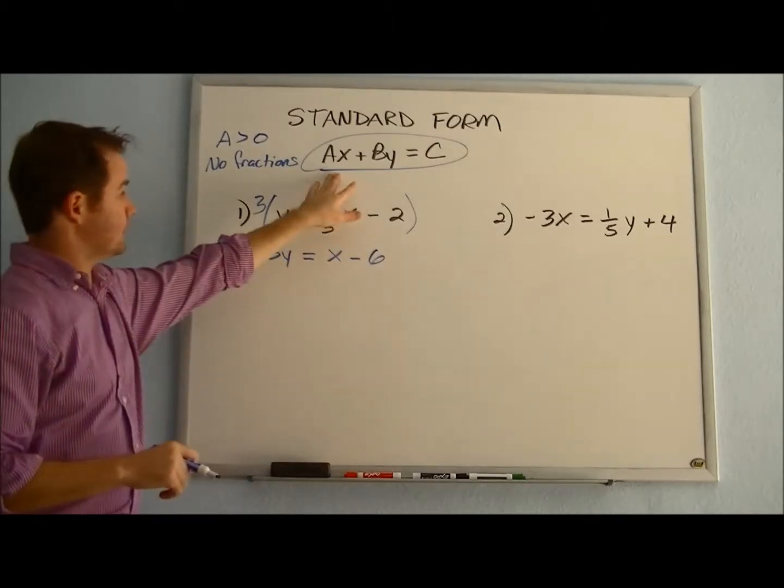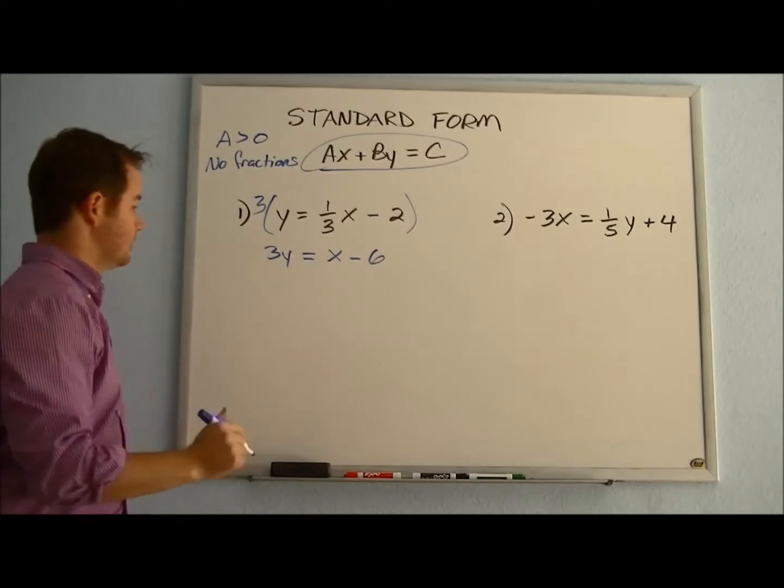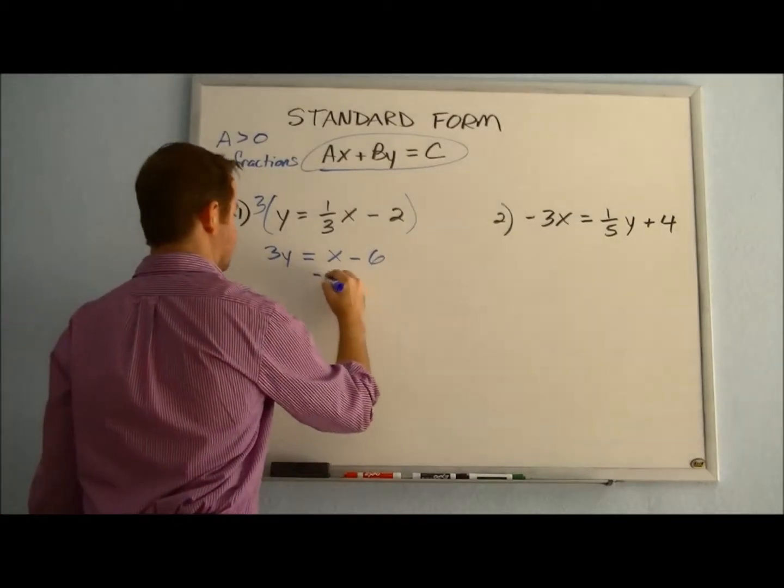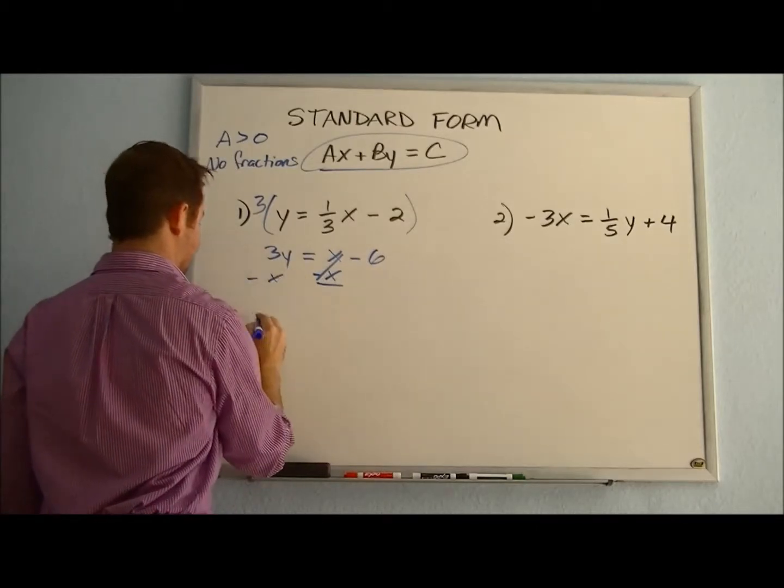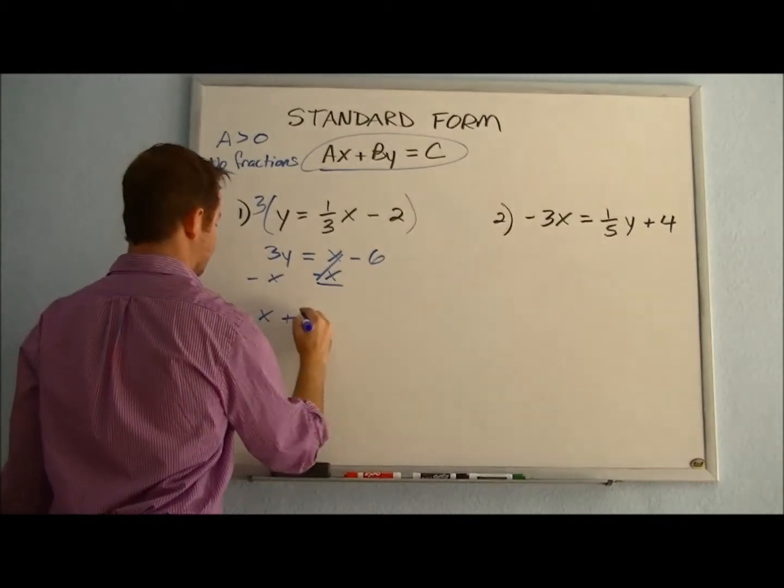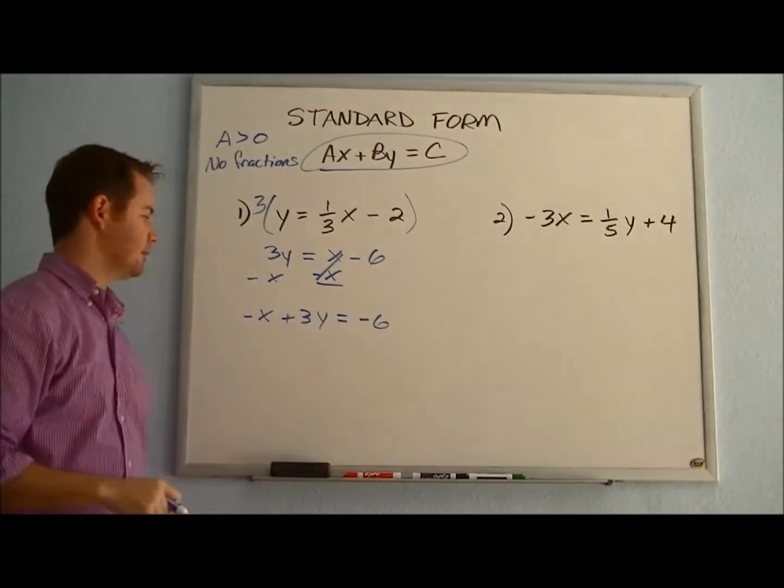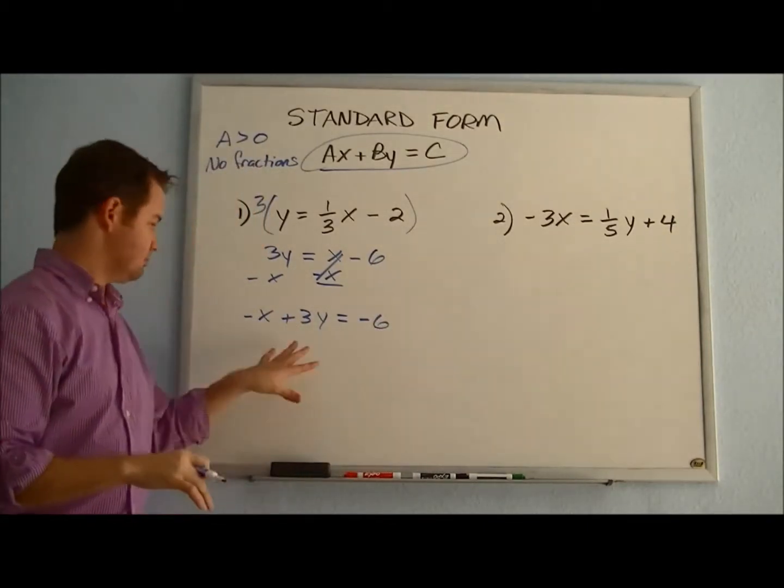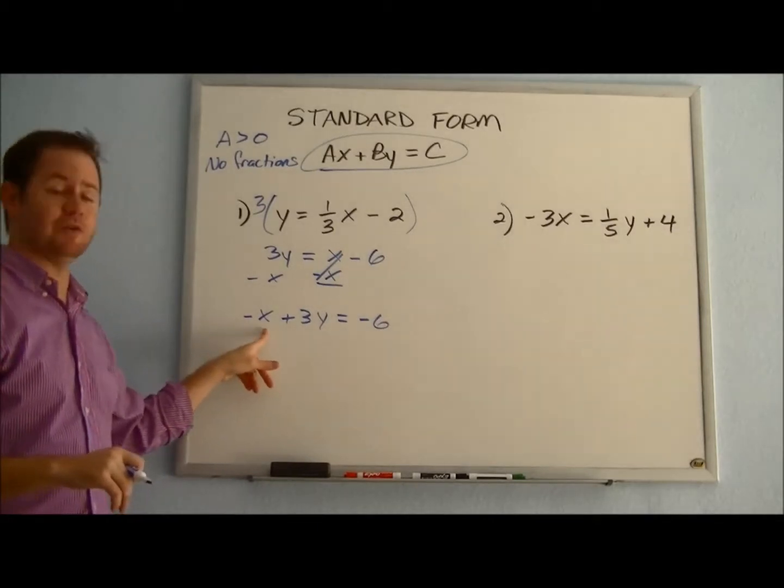Now, for standard form, remember, we want to get our x's and our y's on the same side. So let's move that x over, subtracting x. And that would give us -x + 3y = -6. Now some of your teachers might let you keep it in this form where we have a negative coefficient on the x.